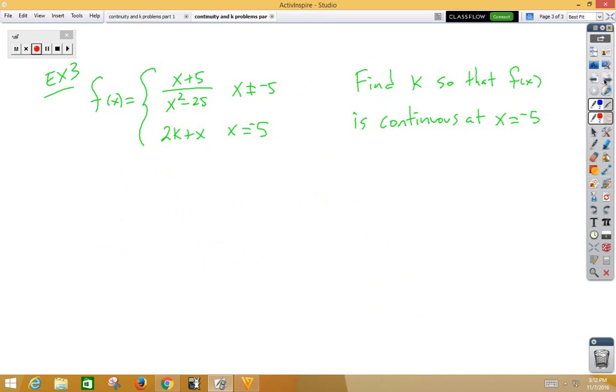One more time. So in example 3, we find k so that f of x is continuous at x is negative 5 this time. Again, two-sided limits got to equal the value at the point. So we've got the limit as x approaches negative 5 of x plus 5 over x squared minus 25 is equal to the value at the point, which is 2k plus x.